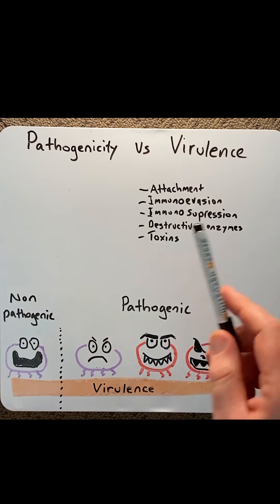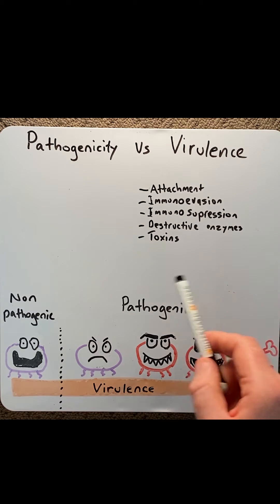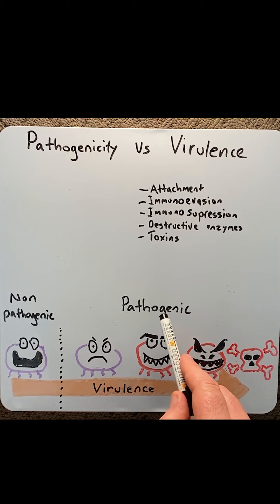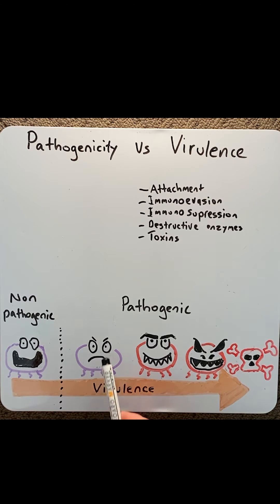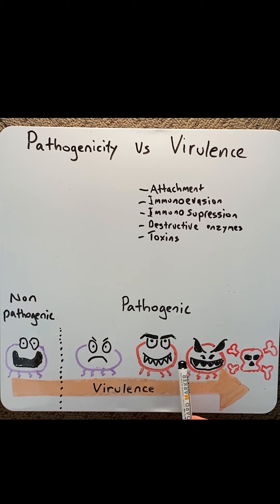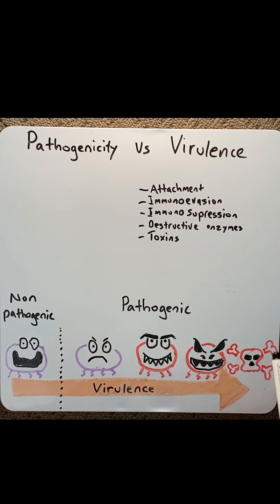Virulence, however, is a quantitative term, which is used to describe only pathogenic microorganisms and to describe how nasty they can get. I've drawn a scale here to illustrate the severity of pathogens. At one end of the scale, a bacteria is a little bit bad and likely to cause some degree of disease. But as you move down the scale, the bacteria becomes more and more nasty, therefore likely to cause more severe disease, up to possibly causing death.